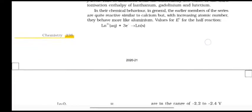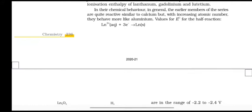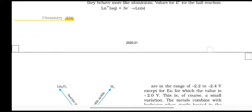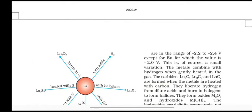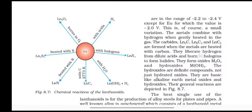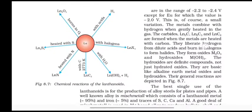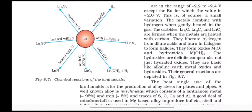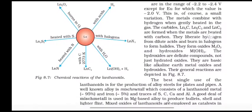In their chemical behavior in general, the earlier members of the series are quite reactive, similar to calcium, but with increasing atomic number they behave more like aluminum. Values of E° for the half-reaction are in the range of -2.2 to -2.4 volts, except for Eu for which the value is -2.0 volts. This is, of course, a small variation.